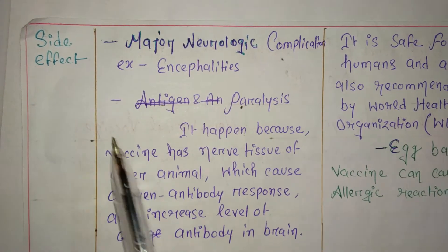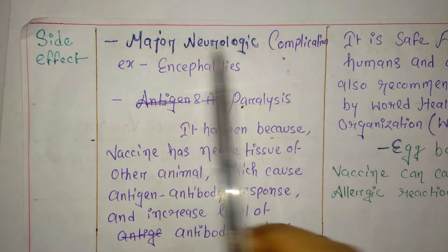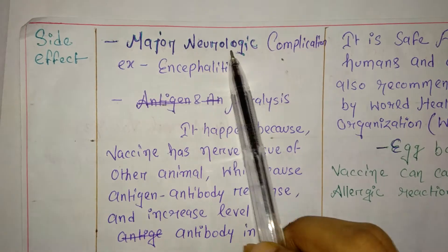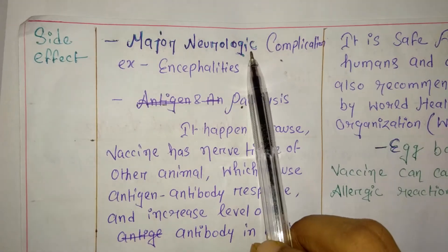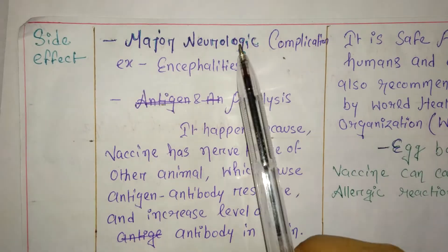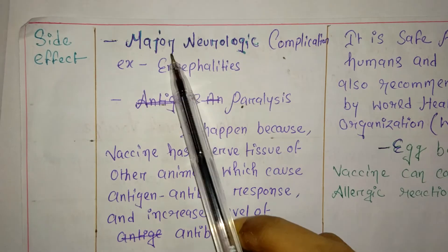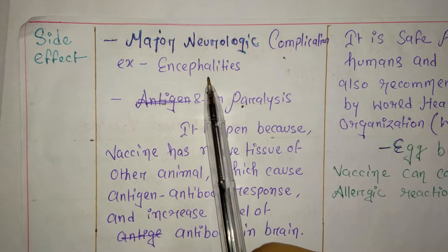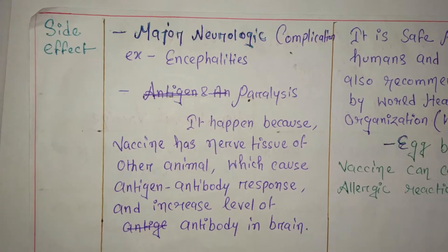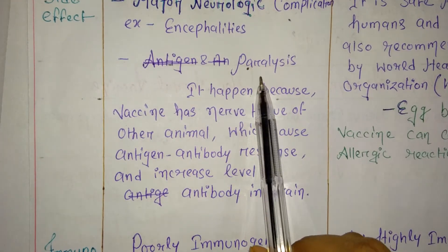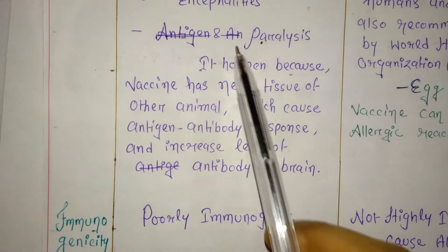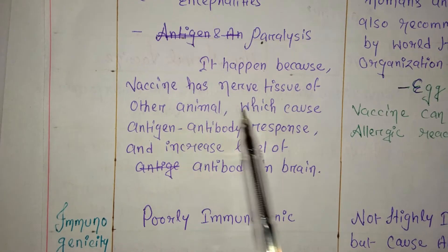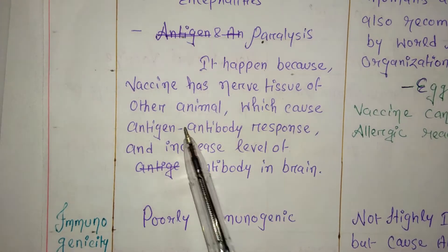Now let's study the side effects of neural vaccine. The major issue is neurological complications. Neural vaccine is made up of nerve tissue, so it actually affects the human central nervous system and peripheral nervous system. This leads to major neurological complications such as encephalitis — inflammation or infection of the brain — and also paralysis.